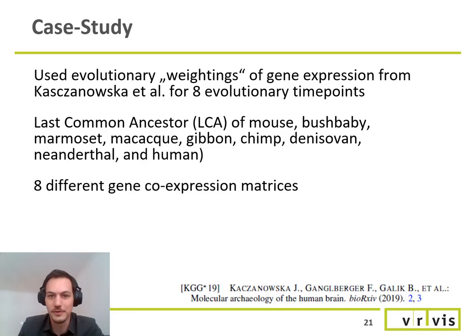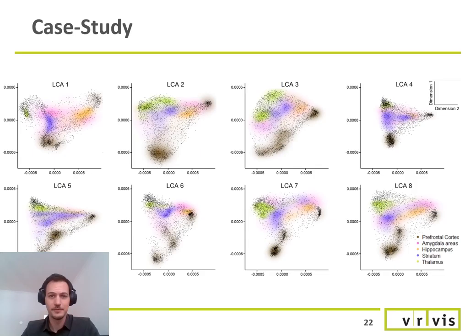These time points are called last common ancestor, or LCA. So time point LCA1 means the evolutionary changes of genes when the last common ancestor of mouse and bush baby evolved. LCA2 is the last common ancestor of bush baby and marmoset, LCA3, the marmoset and macaque, and so on until the modern human.